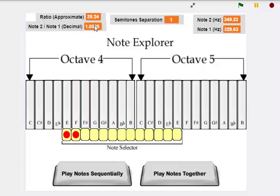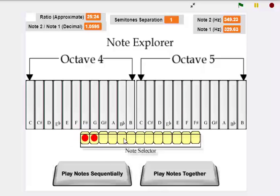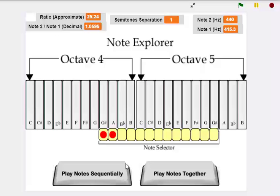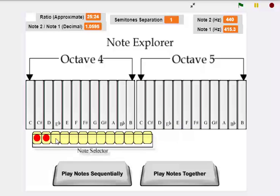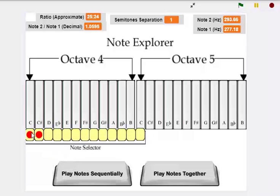Now this ratio of 25 to 24 sounds dissonant. Sometimes, perhaps in blues or jazz, you may want a dissonant note. And a musician may play that on purpose because they like the gritty quality.